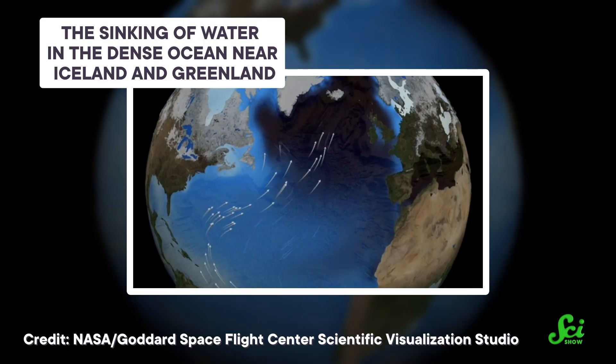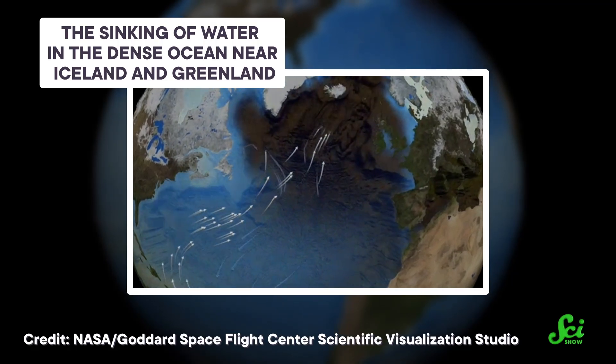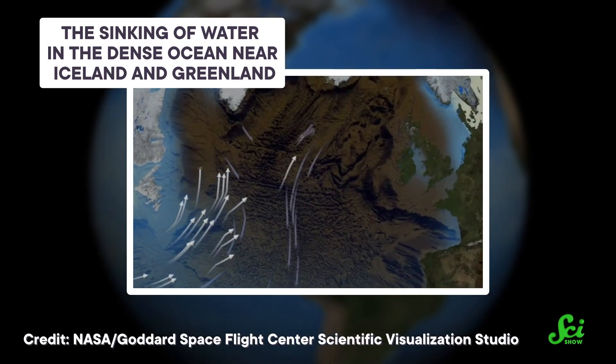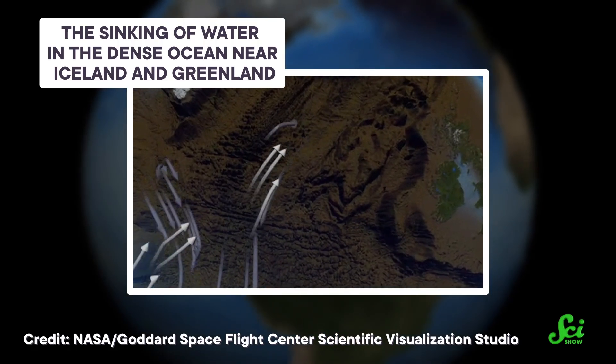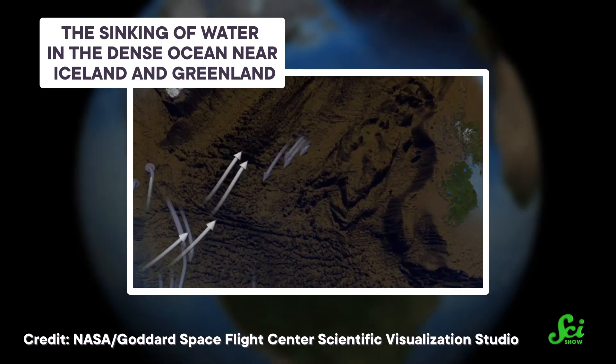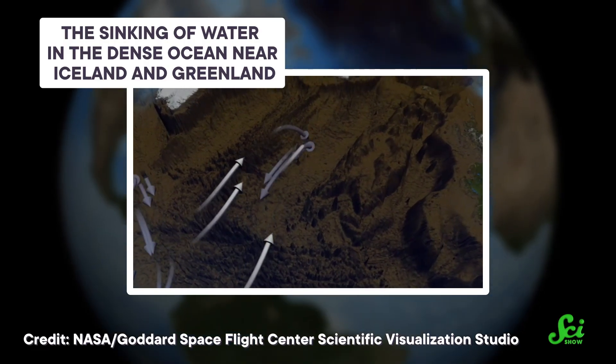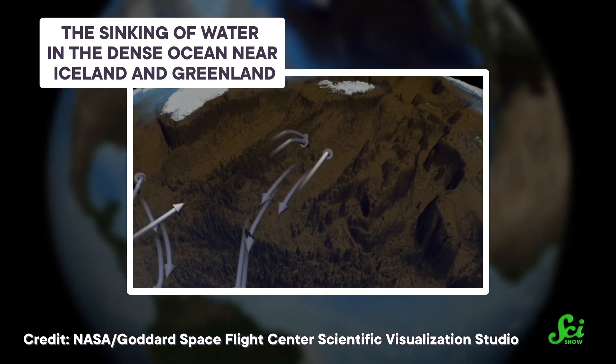When that warm water hits the frigid climate of the Labrador Sea, it starts to cool. And since cold, salty water is extremely dense, it sinks, moving all the way down into the bottom of the ocean. But just before that moment, the water was at the surface, in contact with the atmosphere. It's been absorbing gases from the atmosphere, including oxygen. That oxygen stays in the seawater as it sinks and gets brought down into the deep ocean.